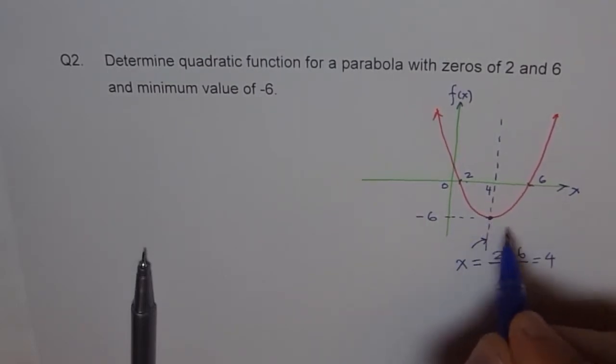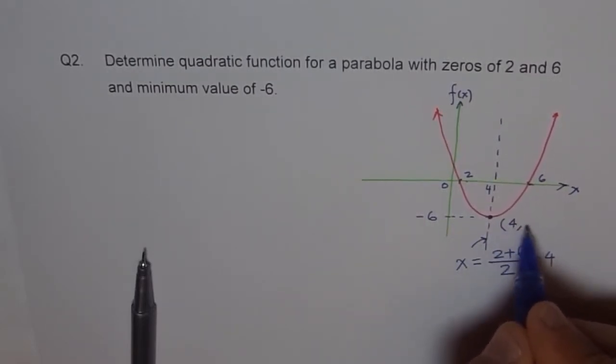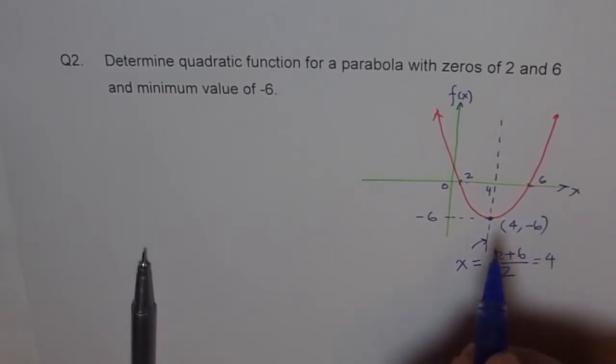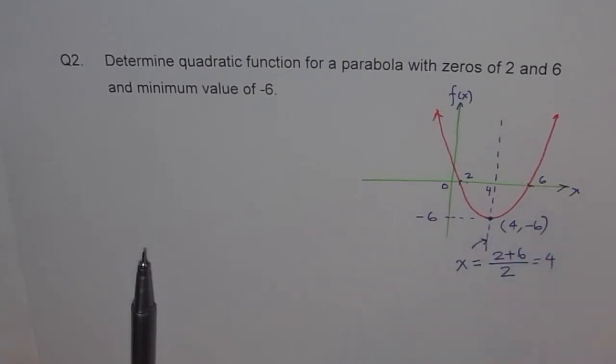Therefore, this vertex for us is (4, -6). Does it make sense? So we can use this point to find the value of a, the leading coefficient.